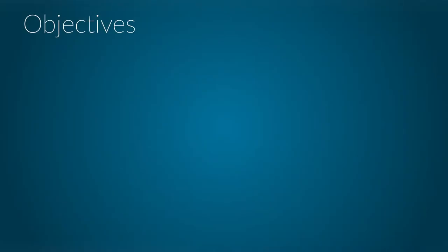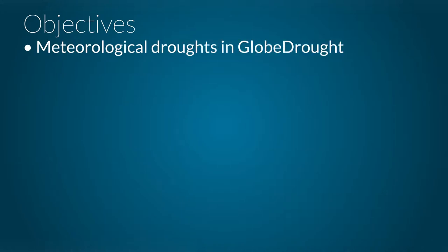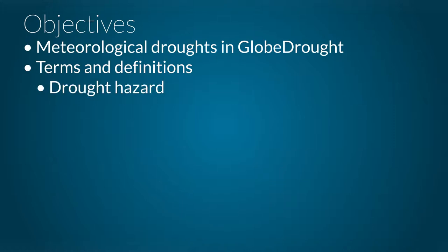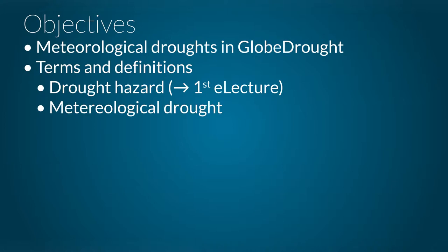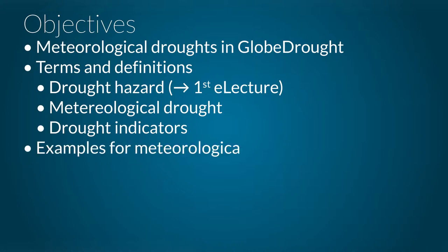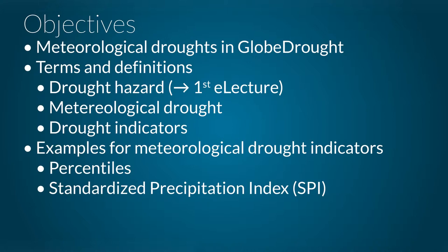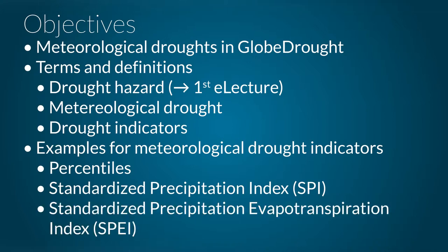The objectives of this lecture are: first, to give you an overview of the GLOBE DRAWD project and the meteorological droughts context. Then we want to give you an introduction to terms and definitions — the first term is drought hazard, which is a short reminder from the first e-lecture. Then we will talk about meteorological drought and drought indicators, and give examples such as percentiles, the Standardized Precipitation Index (SPI), and the Standardized Precipitation Evapotranspiration Index (SPEI).